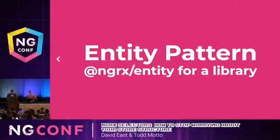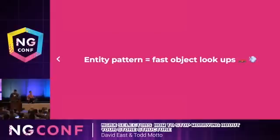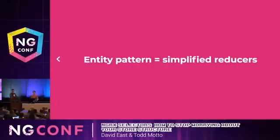Rather than having to loop through 1,000 items just to retrieve one, we can quickly access a single item — and that's what the entity pattern enables. The entity pattern is great for fast object lookups: getting the 10,000th item in a list is just as fast as getting the first. It also simplifies reducers by giving us a standard way to write them.